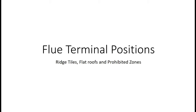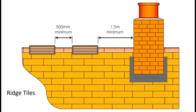Flue terminal positions: ridge tiles, flat roofs and prohibited zones. Ridge tiles are the terminals which end right on the ridge of a roof. Because they are right at the apex of the roof, they have particular rules about their location and in particular the distance from chimneys and the distance from each other.